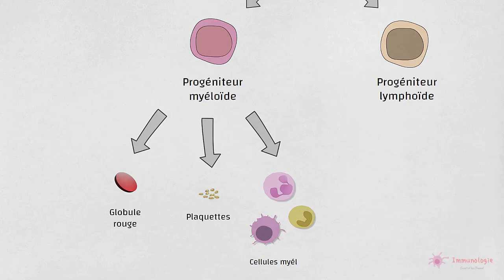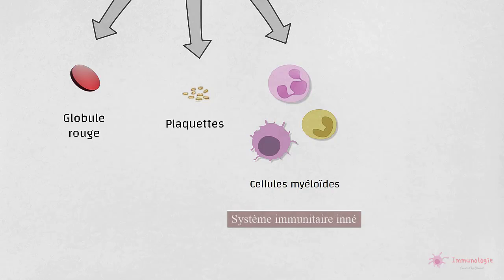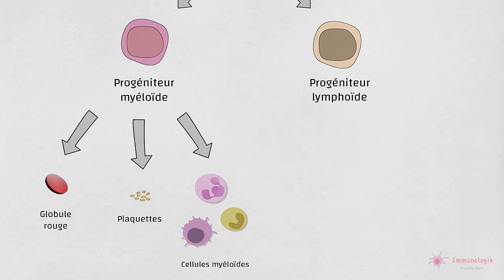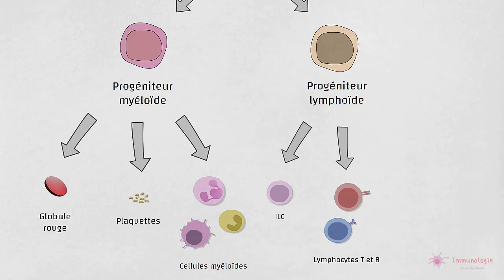Les cellules myéloïdes font partie du système immunitaire inné et sont les premières cellules à réagir à une infection. Alternativement, le MPP peut devenir une cellule progénitrice lymphoïde qui donne naissance à des lymphocytes T, des lymphocytes B, des cellules lymphoïdes innées ainsi que des populations de cellules dendritiques spécifiques.